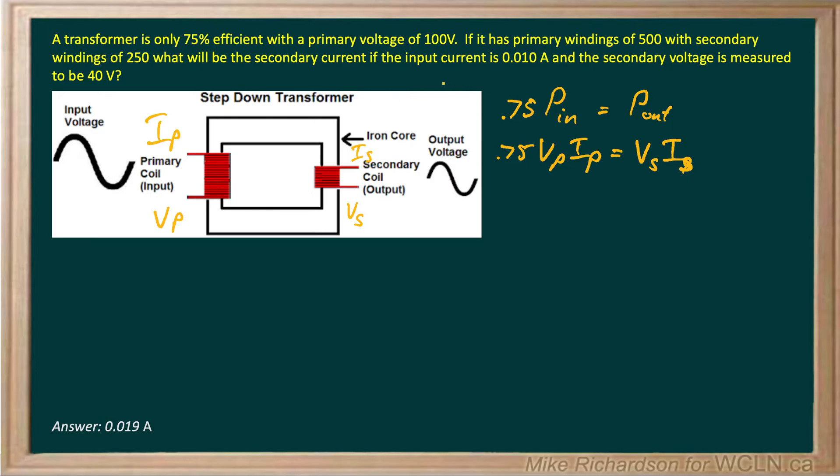Now what will the secondary current be if the input current is 0.01 amps and the secondary voltage is measured to be 40V? Assuming that the primary has windings of 500 and the secondary has windings of 250. They also give you the primary voltage is 100.